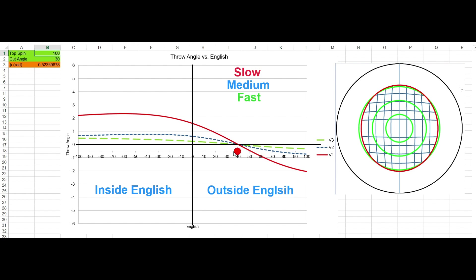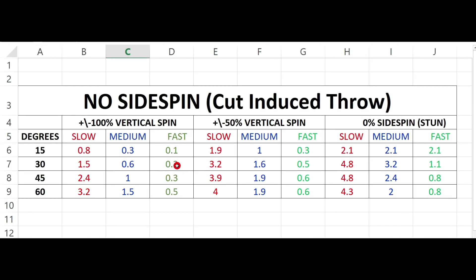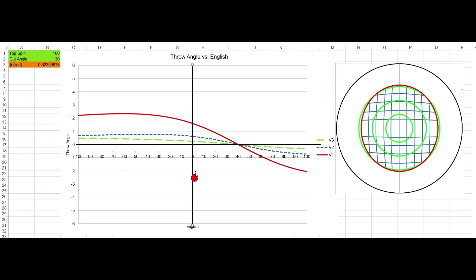You'll notice on the graph the same values that were discussed in cut-induced throw. Those values were around 0.2 degrees for fast, 0.6 for medium, and 1.5 for slow — the same values on this chart, which shows 0.2 for fast, 0.6 for medium, and 1.5 for slow. This is your straight cut-induced throw line.